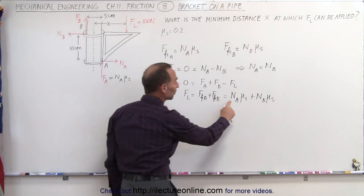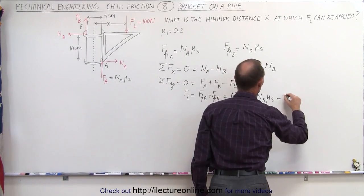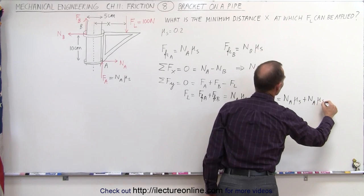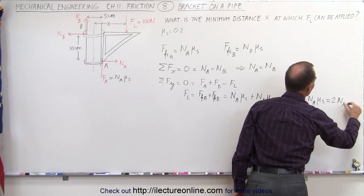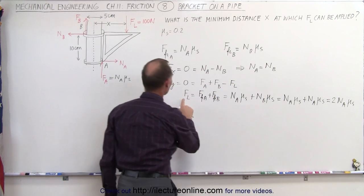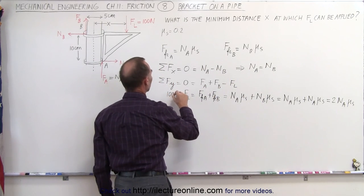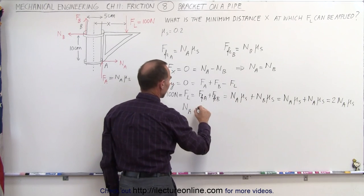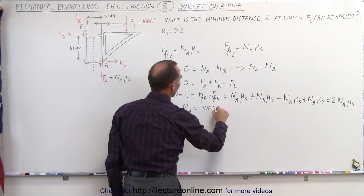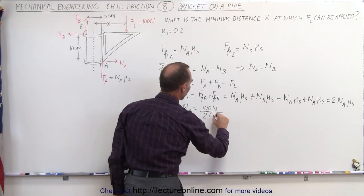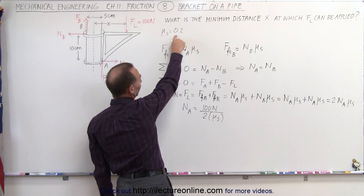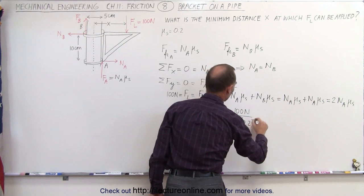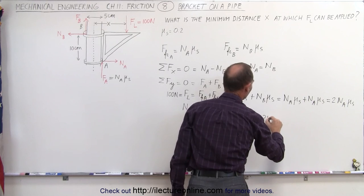Realizing that N_A and N_B must be equal to one another, we can also write this as the normal force at A times the coefficient of friction plus the normal force at A times the coefficient of friction, or twice the normal force at A times the coefficient of friction. We know that the load force is equal to 100 newtons. From this, we can conclude that the normal force at A is equal to 100 newtons divided by two times the coefficient of friction. The coefficient of friction is defined as 0.2, so this is 100 newtons divided by two times 0.2, which equals 0.4, giving us 250 newtons.